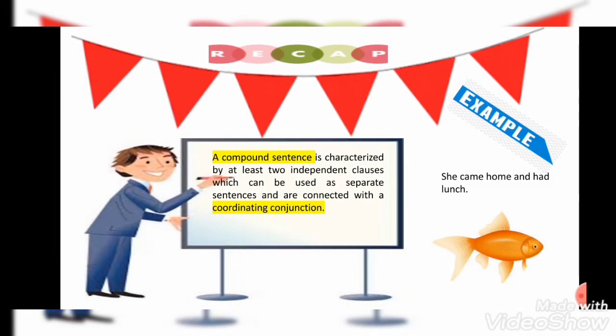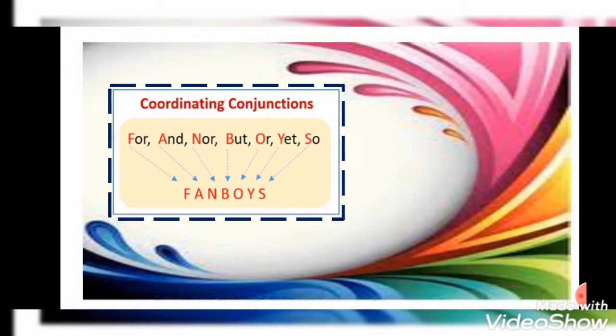A compound sentence is characterized by at least two independent clauses which can be used as separate sentences, and they are connected with a coordinating conjunction. We have two independent clauses joined by a coordinating conjunction. Example: 'She came home and had lunch.' Here 'and' is the coordinating conjunction joining the two independent clauses.